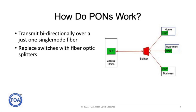So the splitter's role is to act as a broadcast switch on the downstream side from the central office to the users, and on the upstream to combine all the signals into a single fiber for the central office. PONs save on fiber, save on electronics, and that's the big savings in cost.